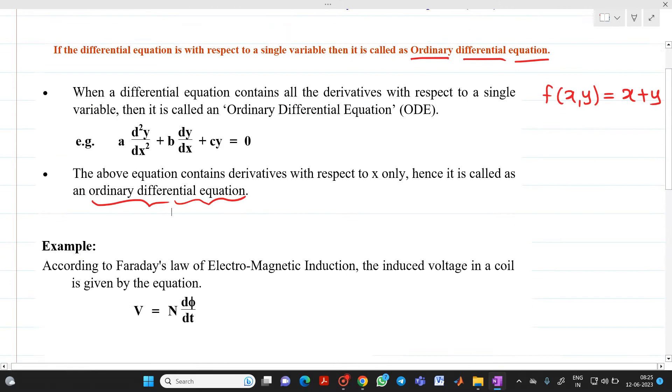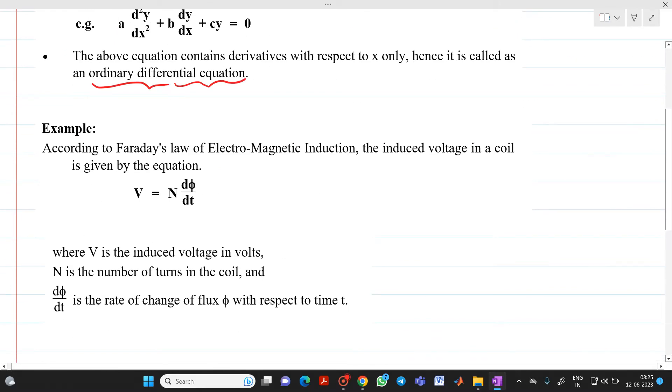Let's take a simple electrical example. We know that according to Faraday's law of electromagnetic induction, the induced voltage in the coil is given by v equal to n d phi by dt.